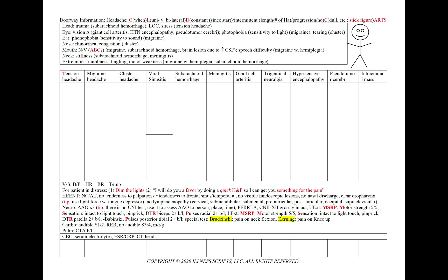Next, we can note the progression — do your headaches appear to be occurring more frequently or more severely? Or, if there has been no progression, we'll also be sure to state that in our patient note to show that we asked. To help characterize your headache, we'd like some descriptors: is it dull or sharp? We'll also note aggravating and alleviating factors, radiation, treatments tried, and severity on a scale of 1 to 10. If there are no aggravating or alleviating factors or radiation, we'll also state that in our patient note.